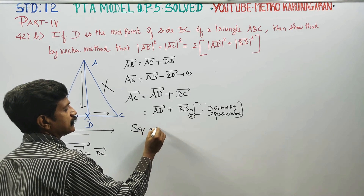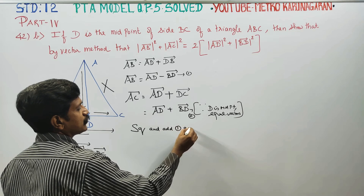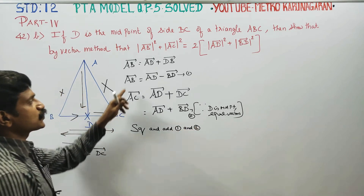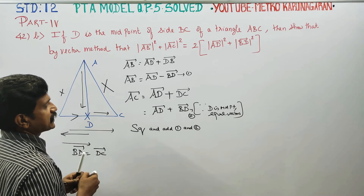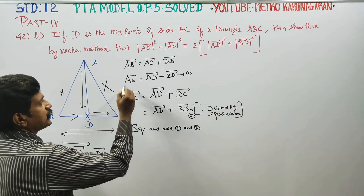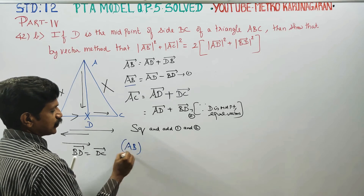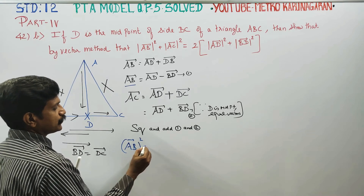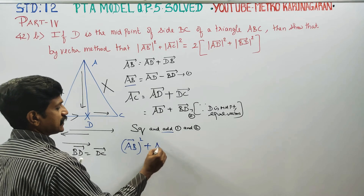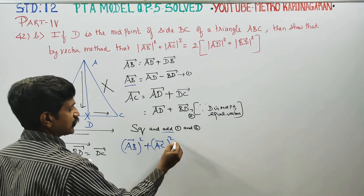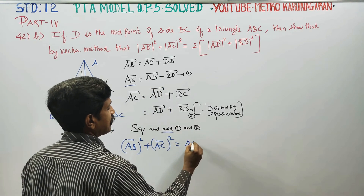Squaring and adding equation 1 and equation 2. LHS: AB vector whole square plus AC vector whole square is equal to AD vector minus BD vector whole square plus AD vector plus BD vector whole square.